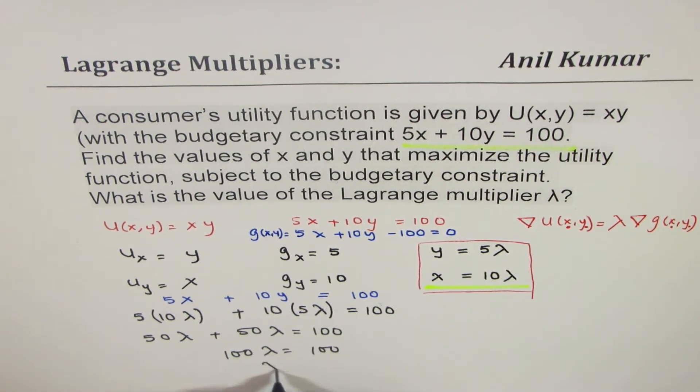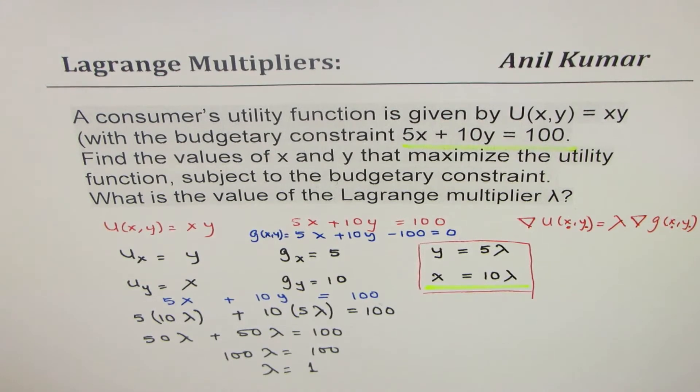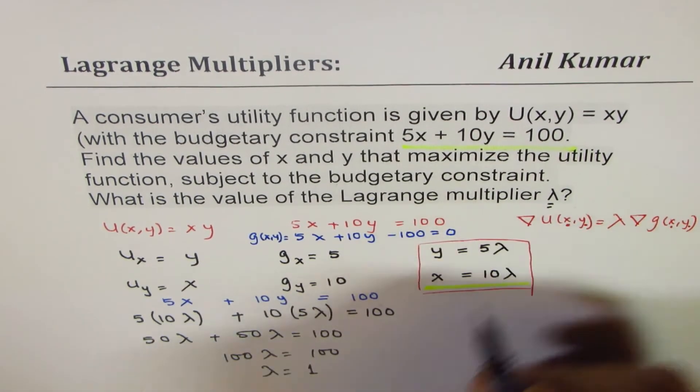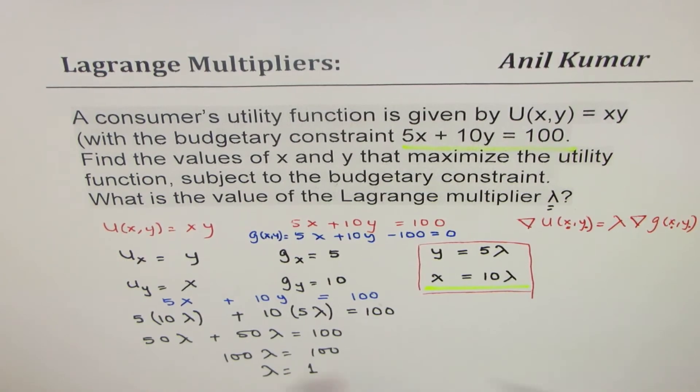And the multiplier is equals to 1. So we get the value of the multiplier, which is 1 in our case.